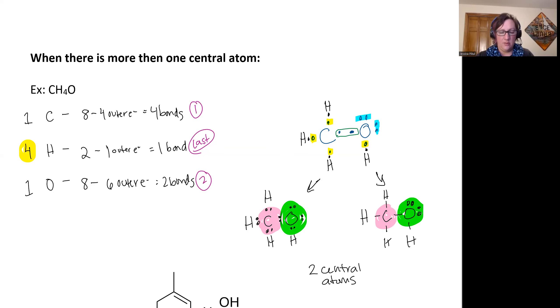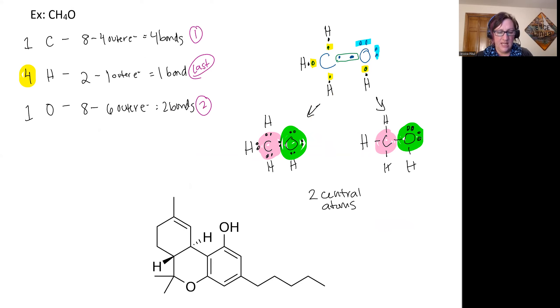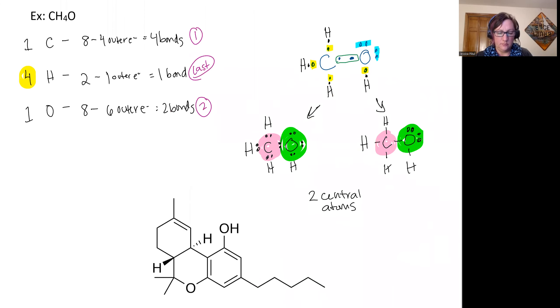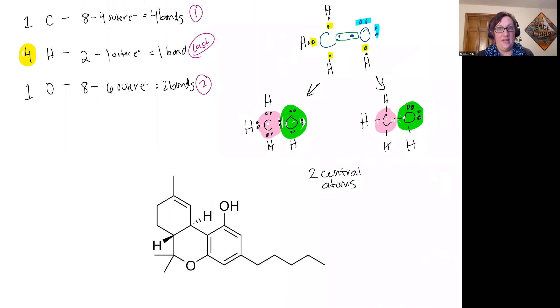In fact, if you look at THC, this has a lot of atoms that are connected to other atoms. Let's see if we can find them all. I know this is the line structure, so it's a little bit trickier. So on any of the ends, these are carbons, but they're bonded to different hydrogens. We've got one here. All of these ones in this ring are bonded to at least another carbon, so they're all central atoms.